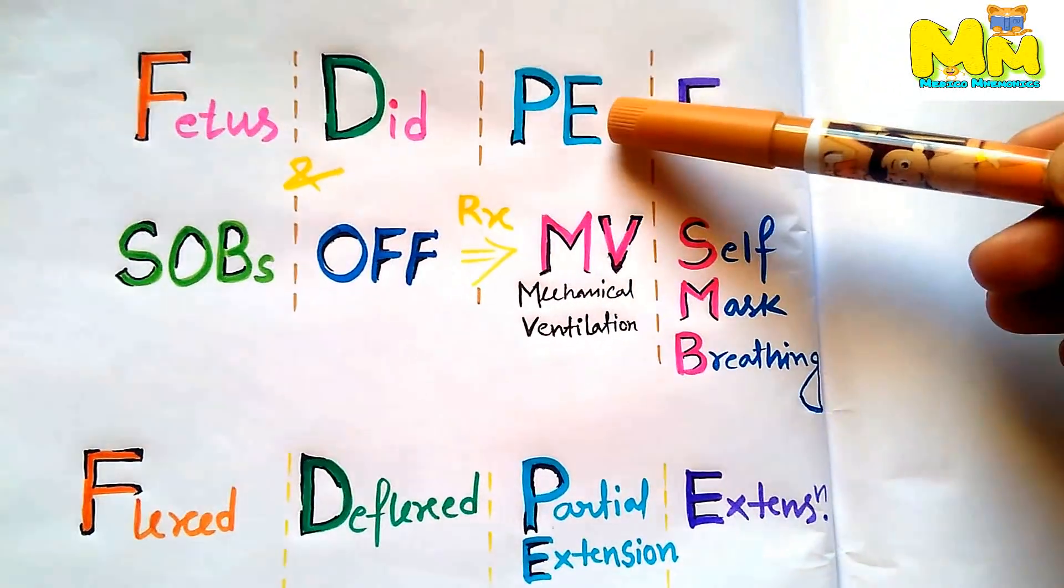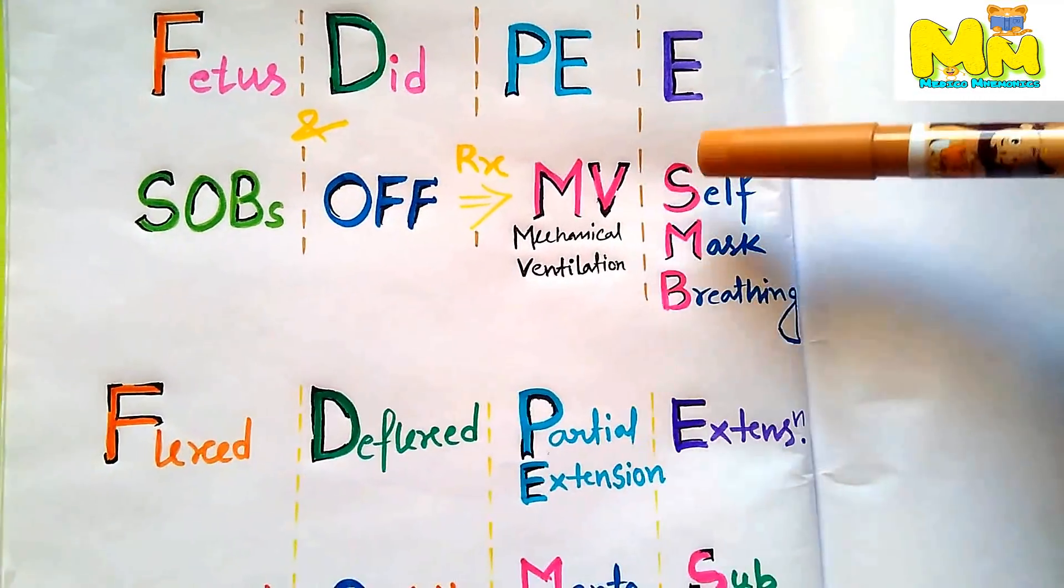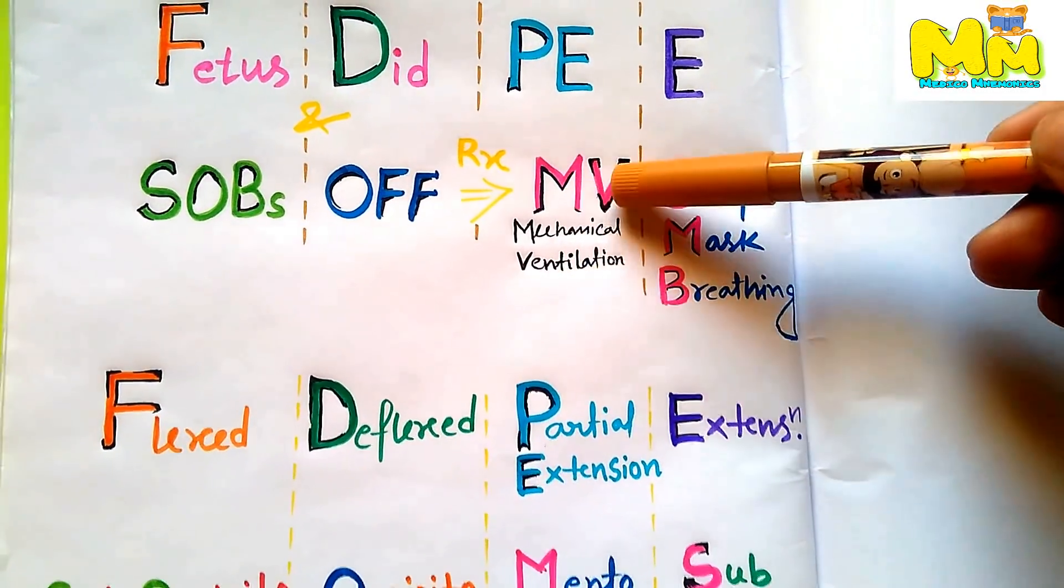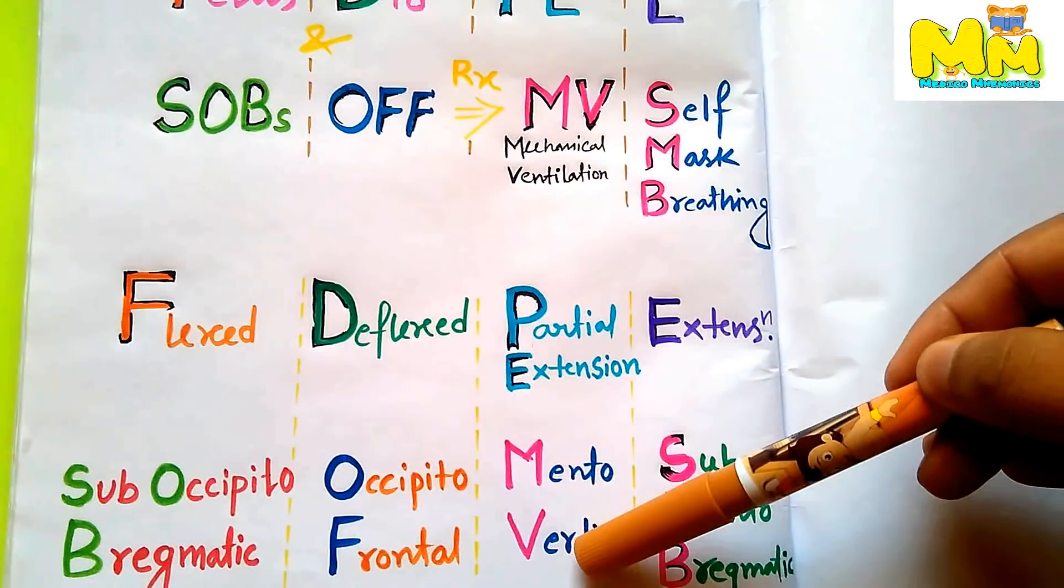There is PE, so partial extension, and the engaging diameter will be MV, that is mentovertical. Mechanical ventilation is coding the mentovertical.